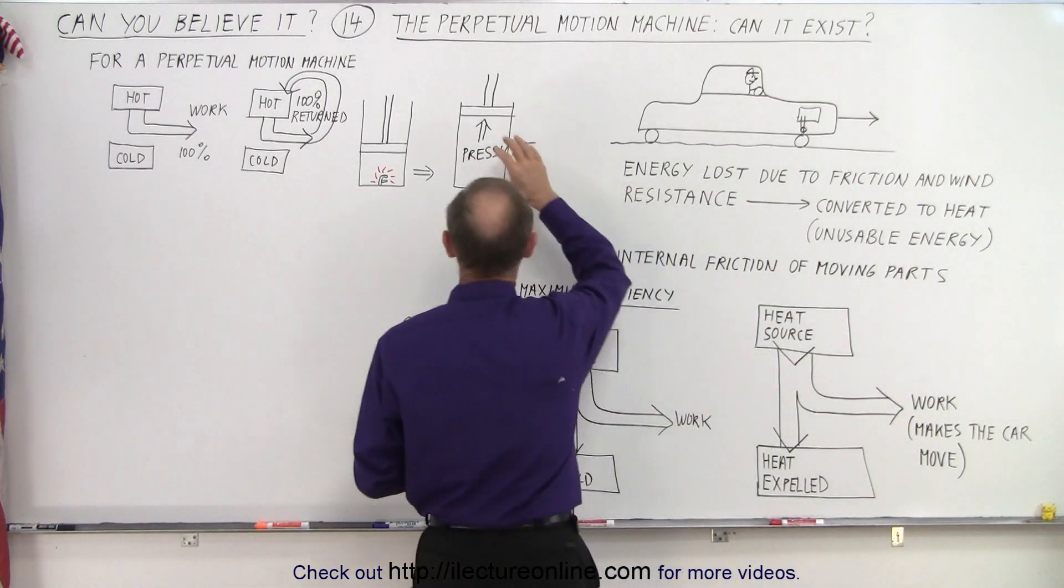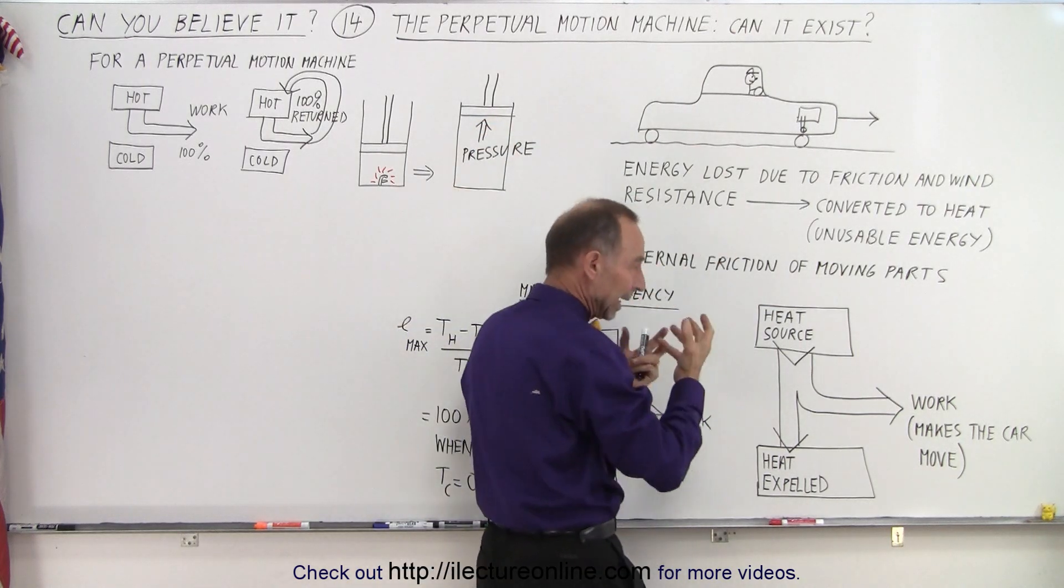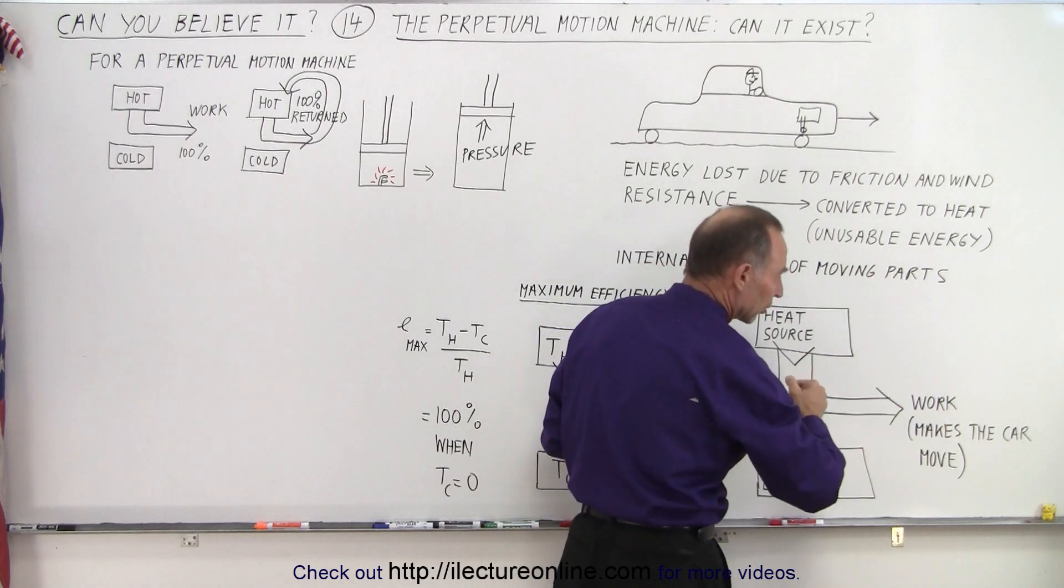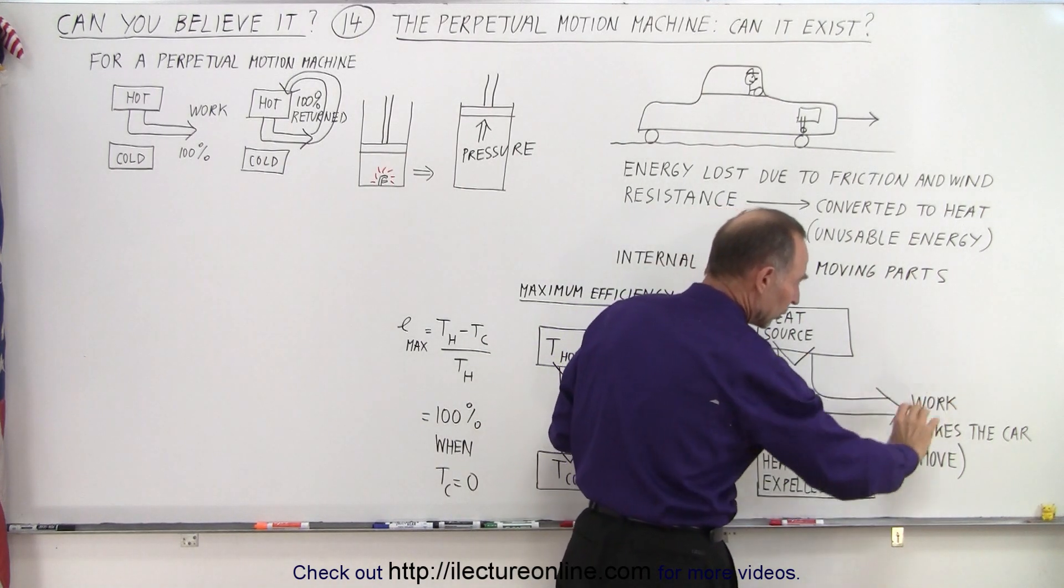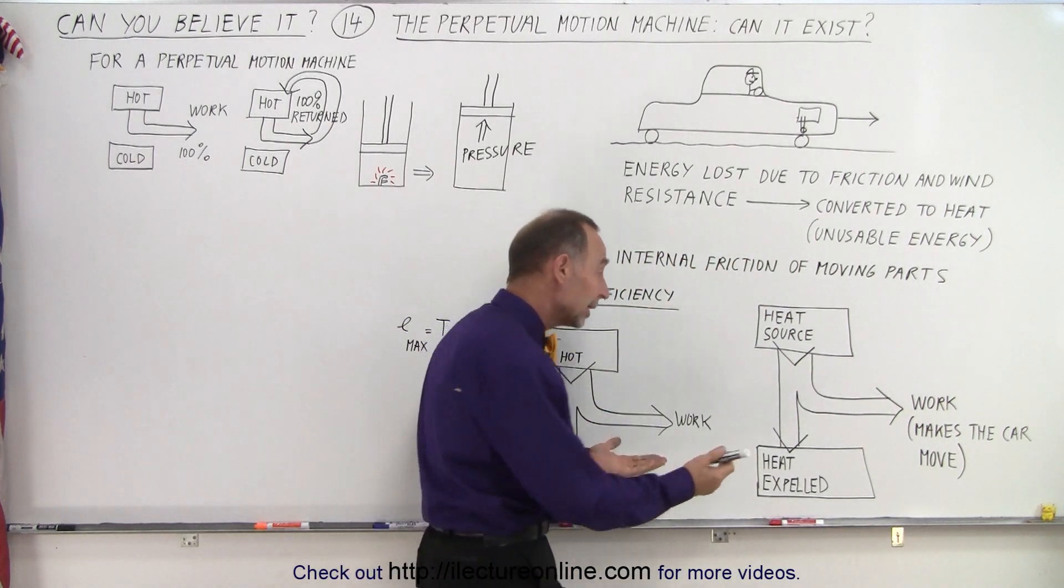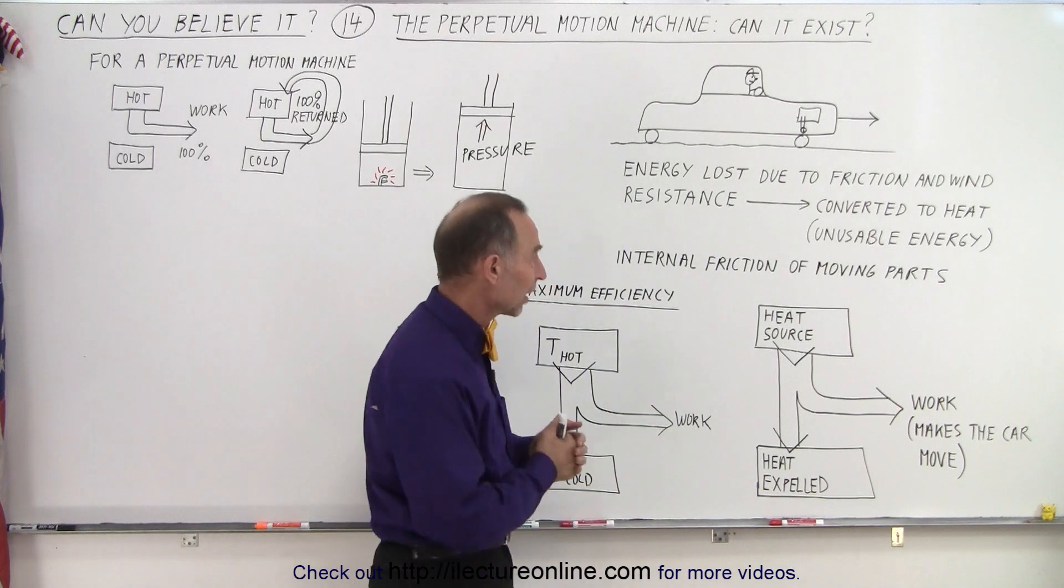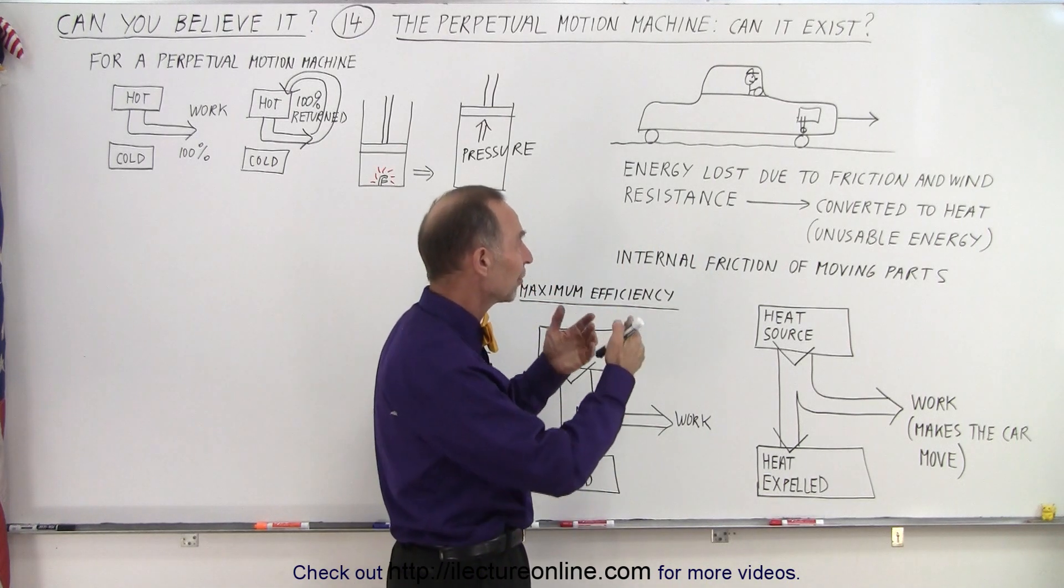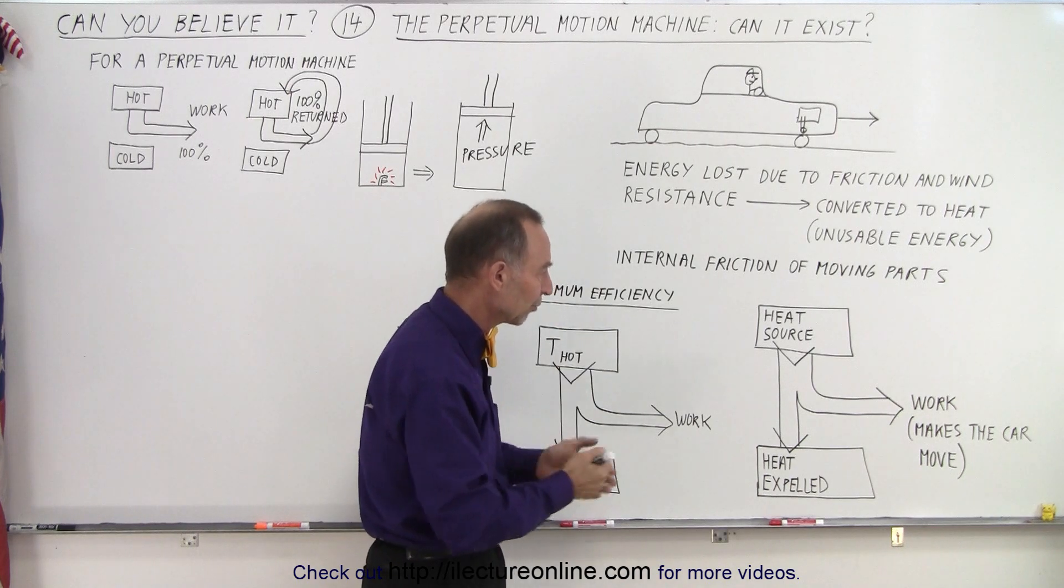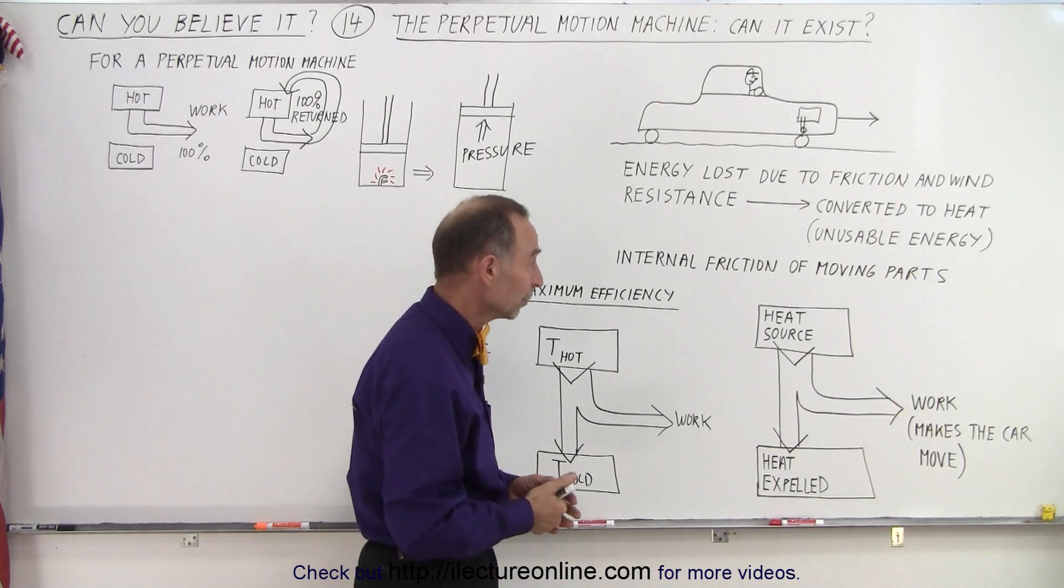So essentially, we have a process that looks like this, where the heat source is the cylinders and the pistons where the heat is generated. The heat generated expands the gases, causes the work to occur, and that work makes the car move forward. Then part of the heat is expelled due to the gases coming out of the tailpipe, wind resistance converted to heat, friction converted to heat. So part of the energy is simply lost and is no longer available.